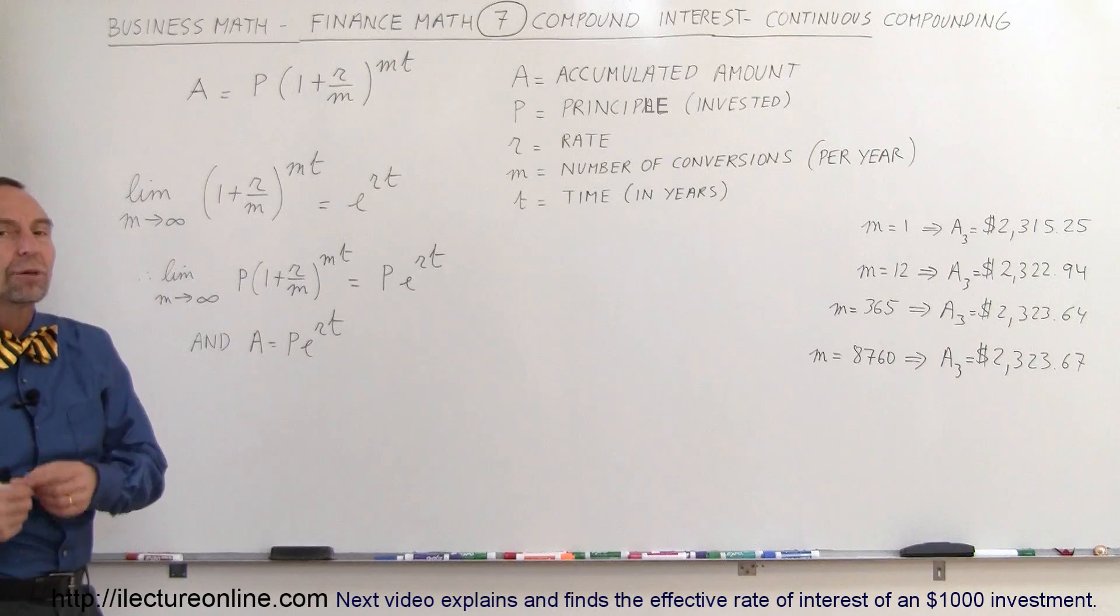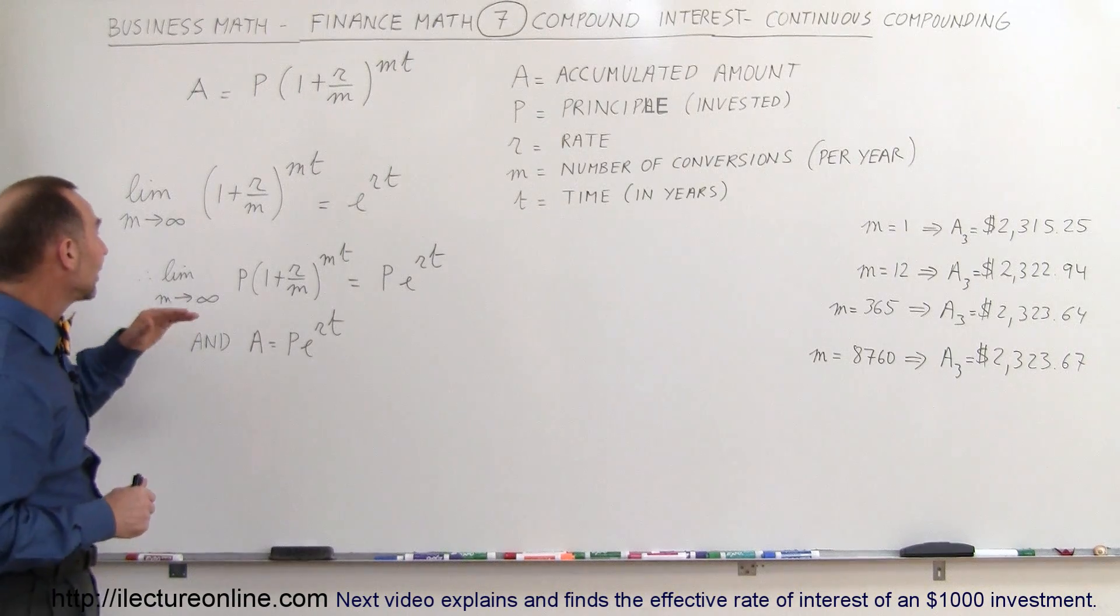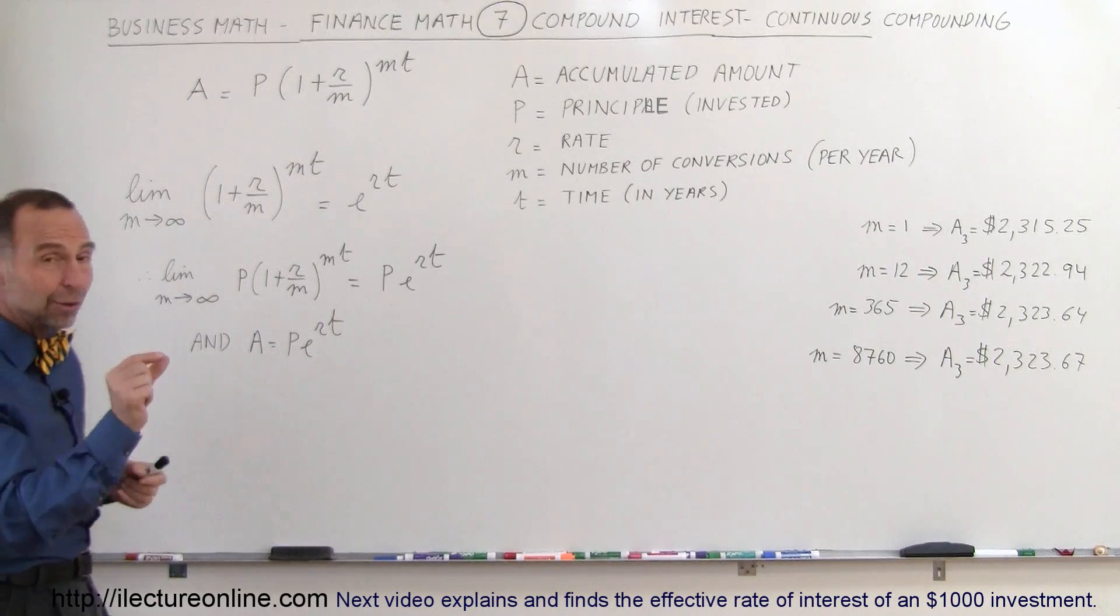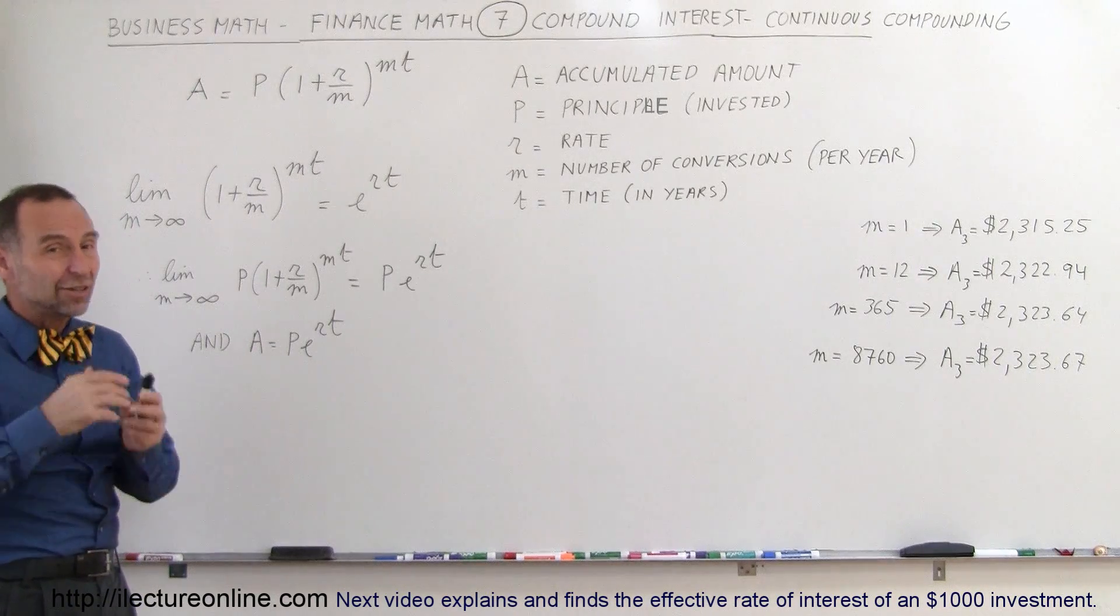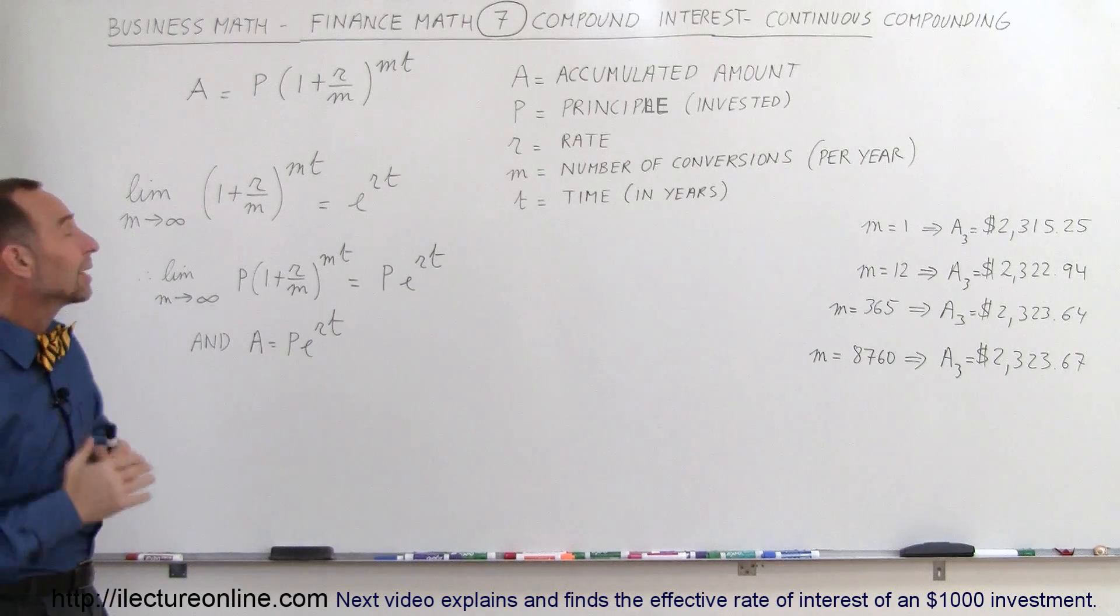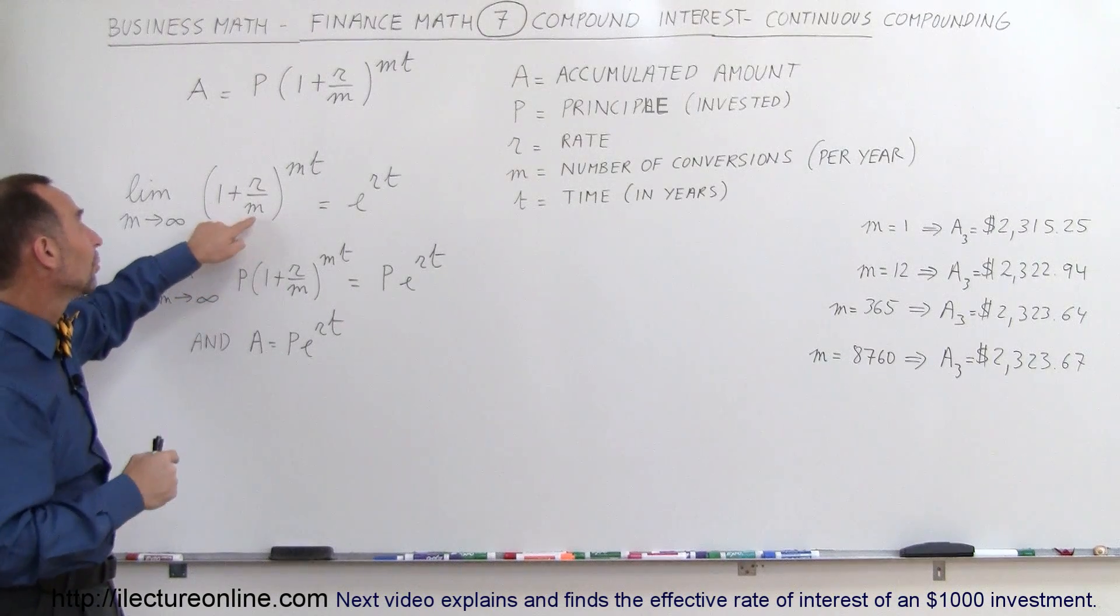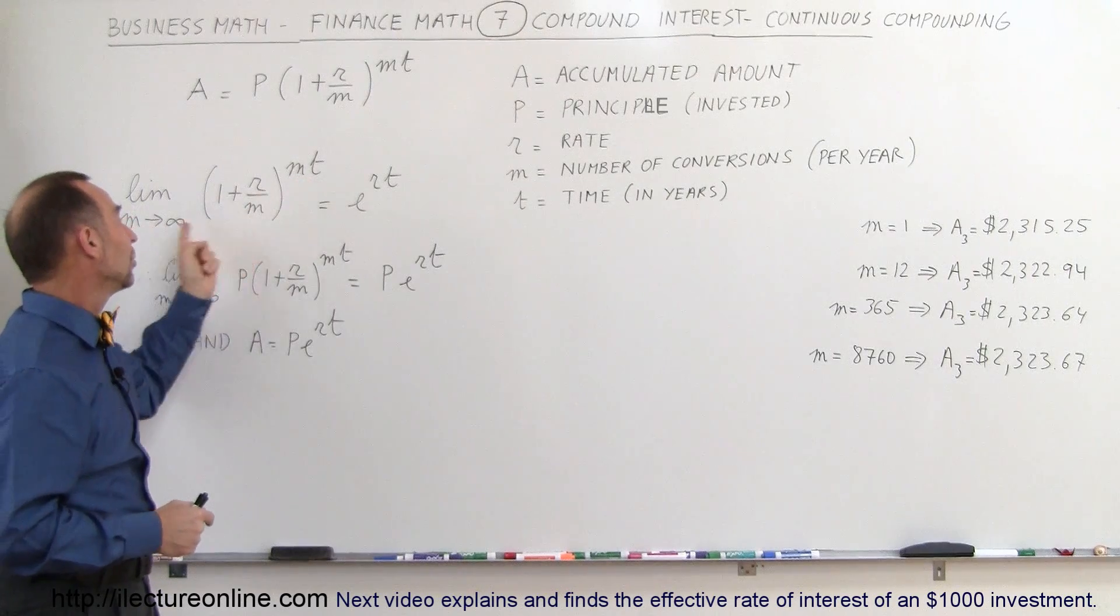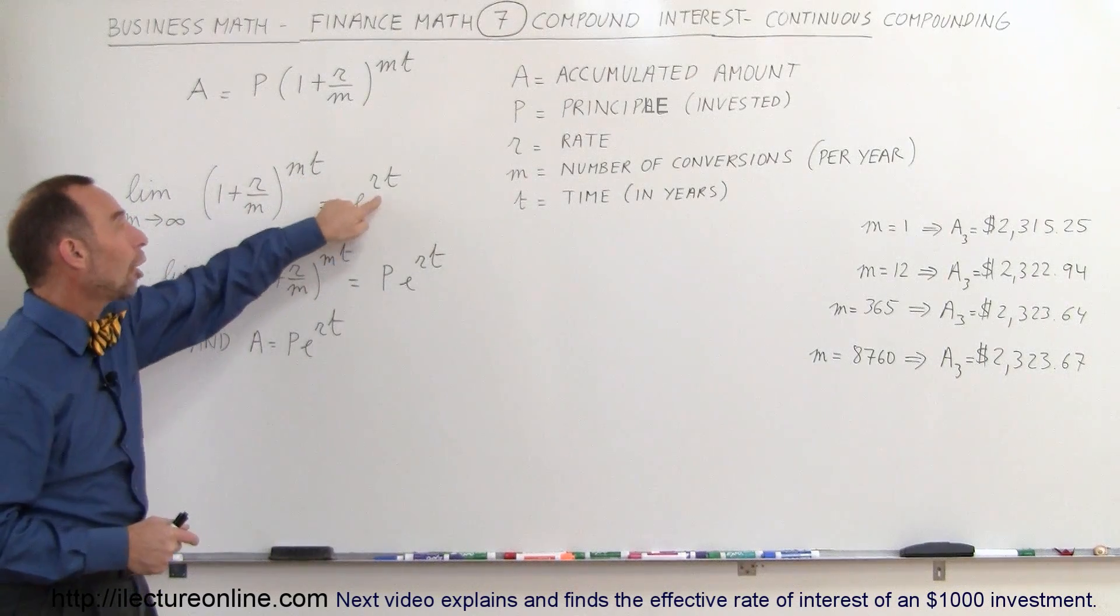So what would continuous compounding give you? Well, it turns out in the limit, as M approaches infinity, as M becomes bigger and bigger, going from hourly to every minute to every second, M becomes a really big number. And eventually when M goes to infinity, this quantity raised to the MT power as M reaches infinity equals E to the RT power.